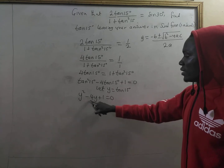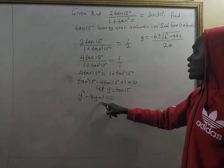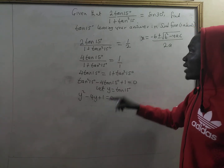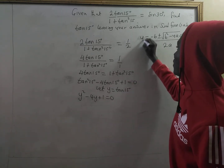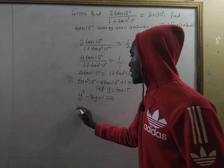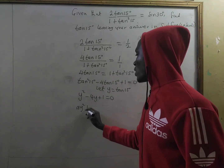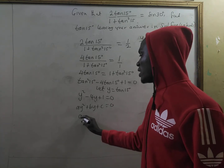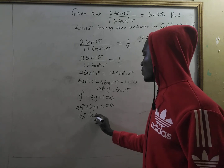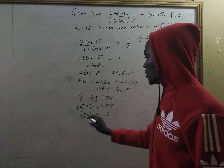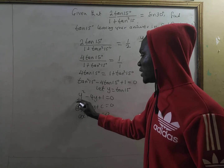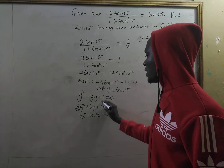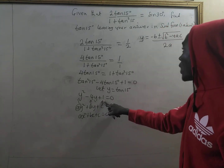This is an equation in y, not in x, so don't write x here. By comparing y squared plus by plus c equals zero with our equation, here a is the coefficient of y squared, that is one; b is the coefficient of y, that is negative four; and c is the constant, that is positive one.